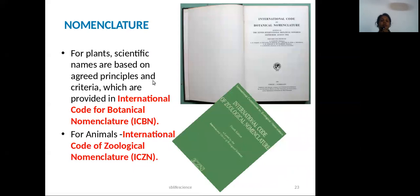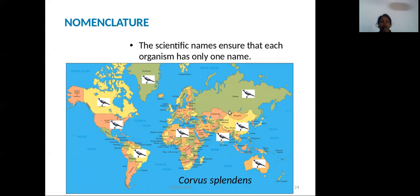The naming rules are governed by ICBN — the International Code of Botanical Nomenclature — for plants, and similar codes for animals. Scientists use these codes. A scientific name is given to each organism so it is universally recognized regardless of local language.